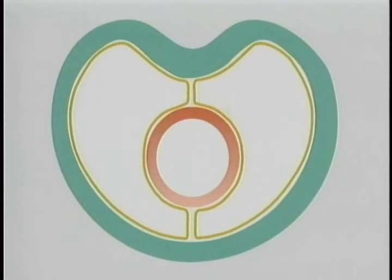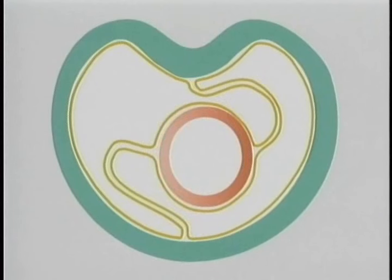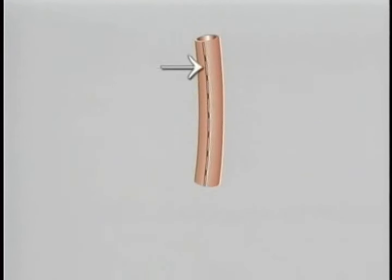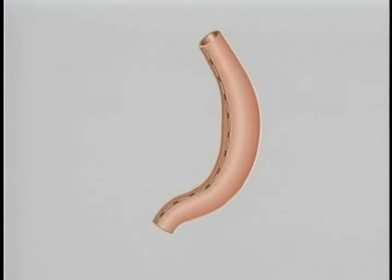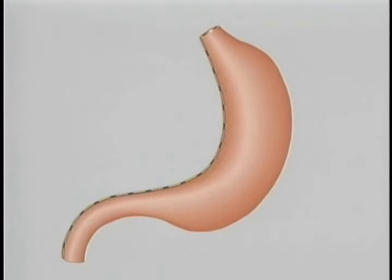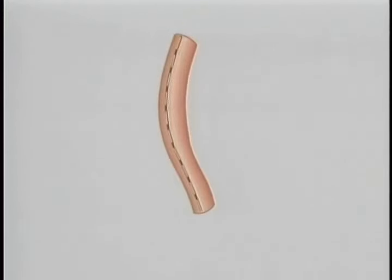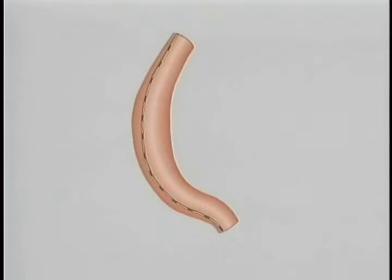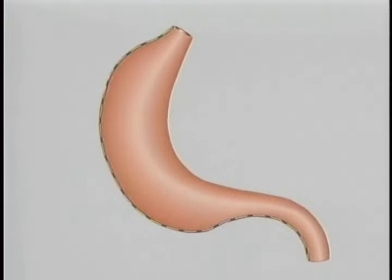As the foregut rotates, the dorsal and ventral mesogastrium rotate with it. The line of attachment of the ventral mesogastrium swings round to the right as the foregut develops, ending up running along the lesser curve of the stomach and the top of the proximal duodenum. On the back, the attachment of the dorsal mesogastrium swings round to the left, ending up running along the greater curve of the stomach and the underside of the proximal duodenum.